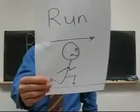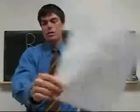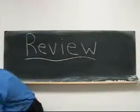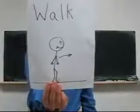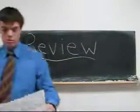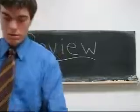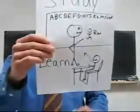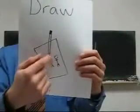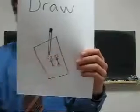He might be running. He might be walking. So the teacher is drawing, drawing on the board. Drawing is a picture — see a picture like this.